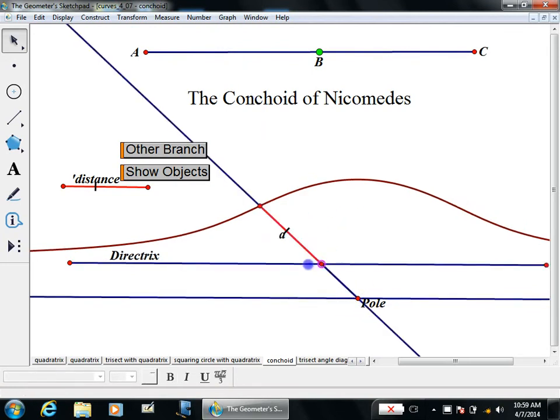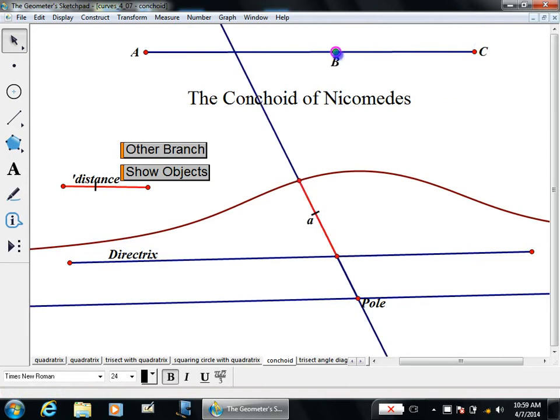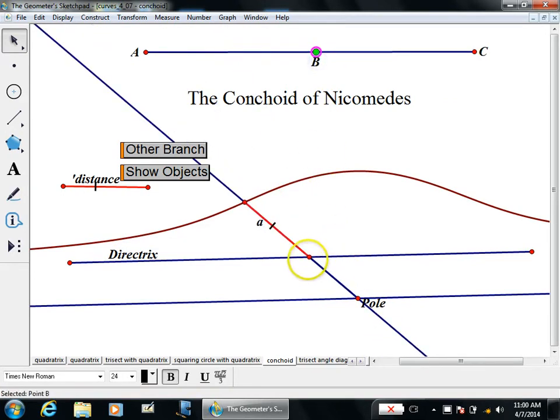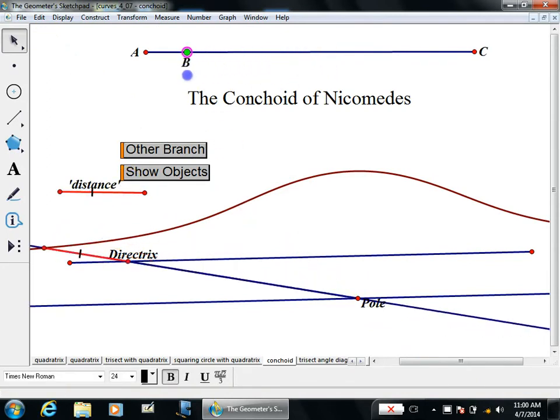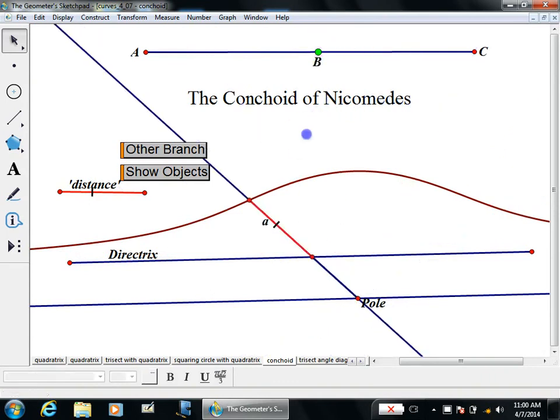What I do is you have a line called the directrix and a point called the pole, and you have a point on the directrix. And you draw a line through the pole and through that point. And once you hit that point, you continue this other distance which is called just distance. When you do that, you get this interesting curve that has an asymptote and it's called the conchoid of Nicomedes.